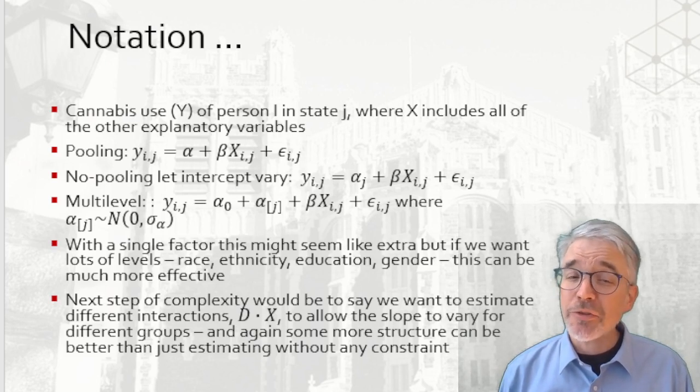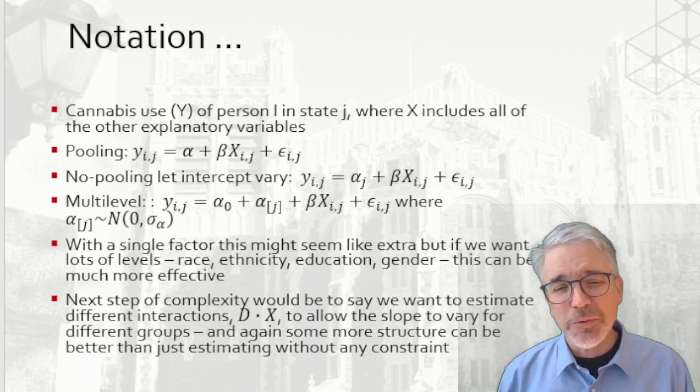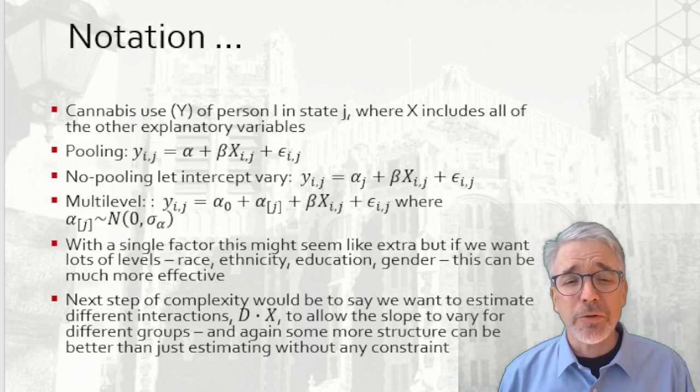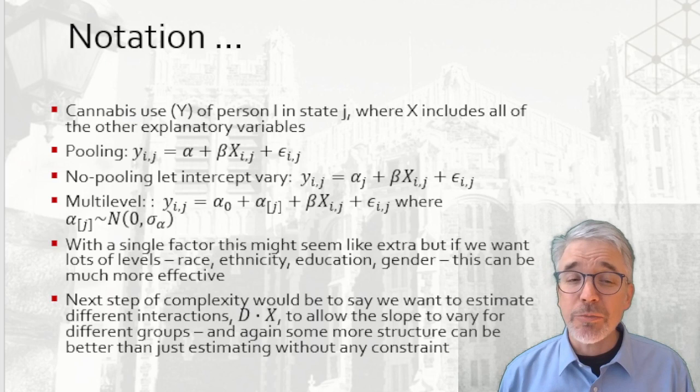The next step is to include interactions with the slope, just like we did before with factors, but with that additional structure imposed about the distribution of those additional factors. The mathematics gets a little more complicated. The estimation machinery gets a little more complicated, but we can model where the slope varies for different groups.